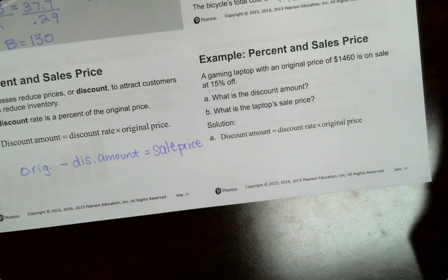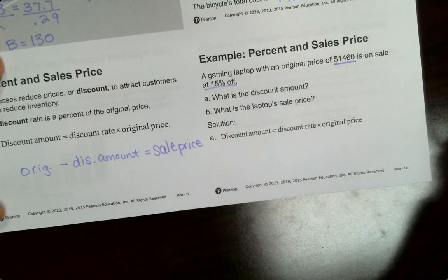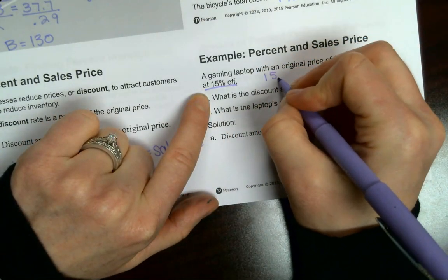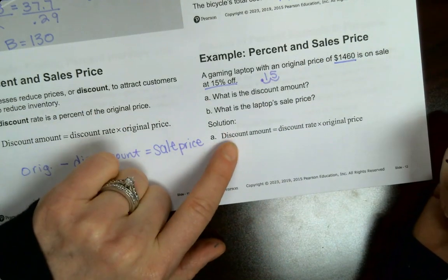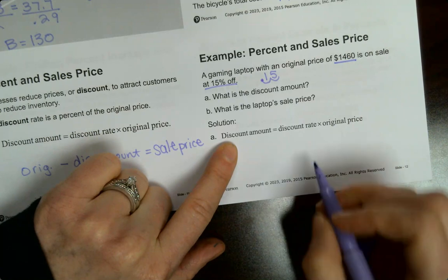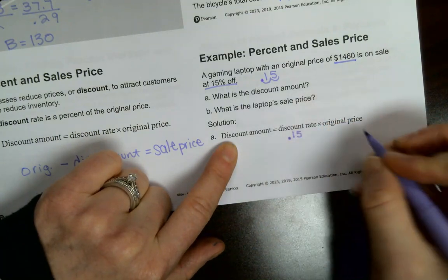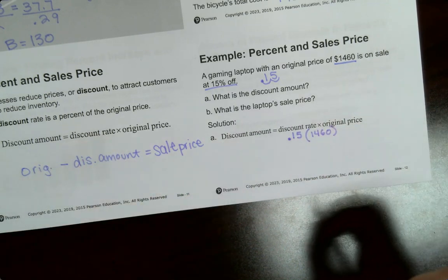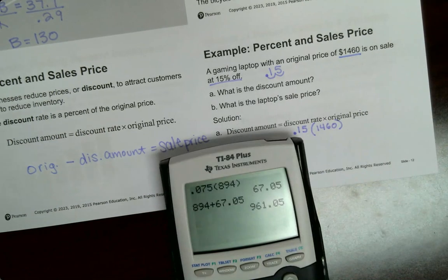So the first example says a gaming laptop with the original price of $1,460 is on sale 15% off. What is the discount amount? So we do need to convert 15% by moving the decimal, so 0.15. So to find our discount amount, we're going to multiply our discount rate. Our rate is a percent, so that's another word for percent times our original price, $1,460.